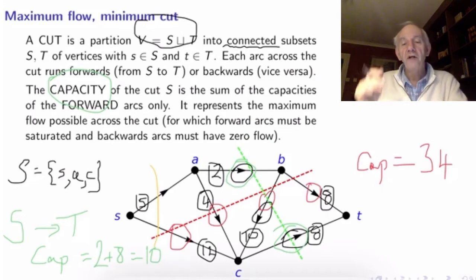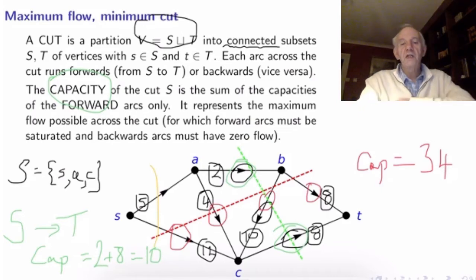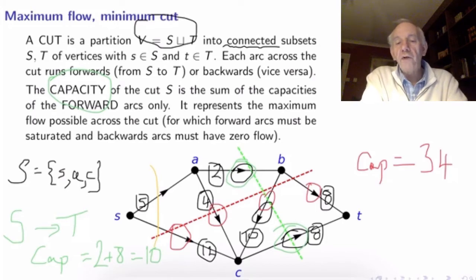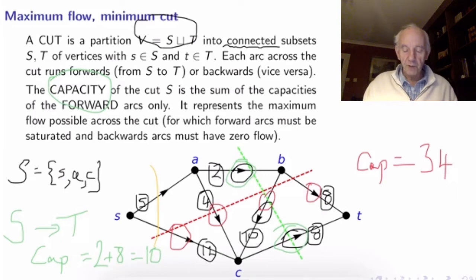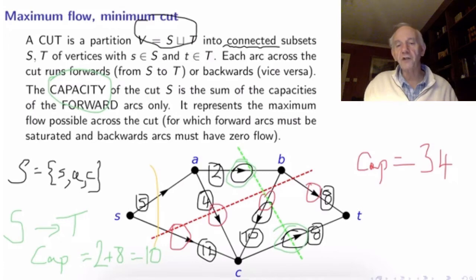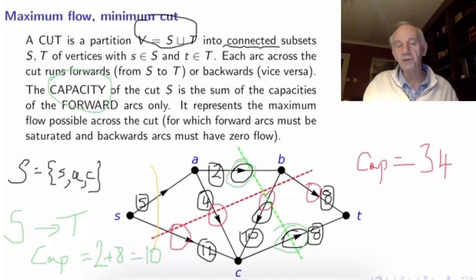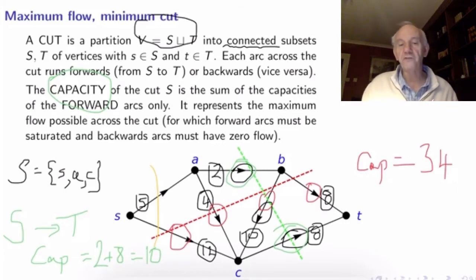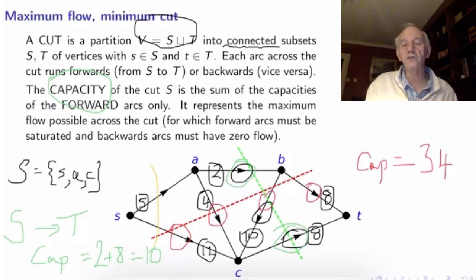The capacity of a cut represents the most flow you can get across the cut. If we want to maximise the flow going from left to right across the green cut, we saturate the forward going edges and make the backward going edge have zero flow. If we saturate the forward going edges we get a flow of 10, which is the capacity of the cut. So the capacity of the cut really is just the most flow you can get across the cut.